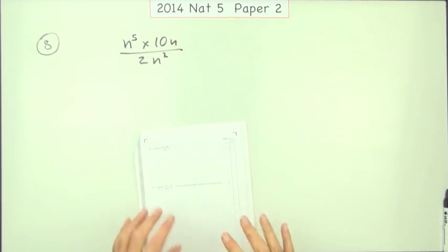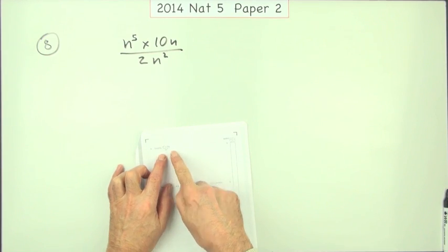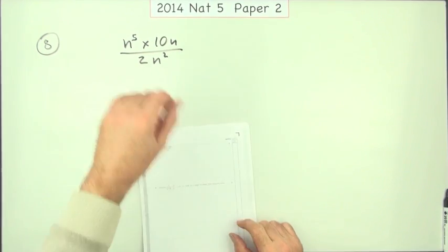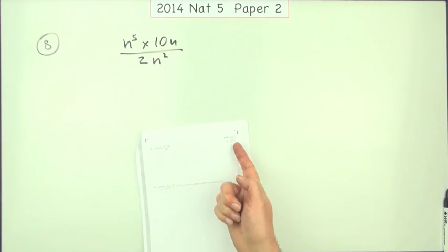Number eight from paper two of the 2014 National Five, here are indices, just working with indices and this little fractional expression here, three marks.